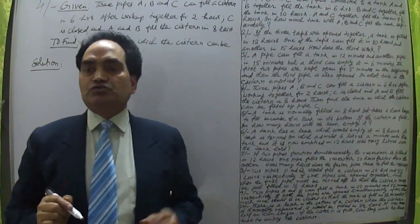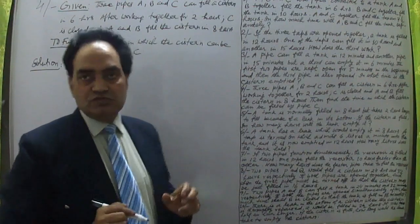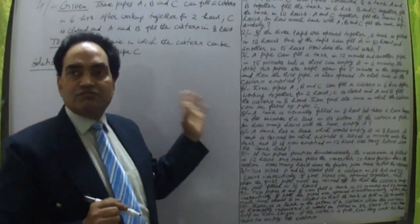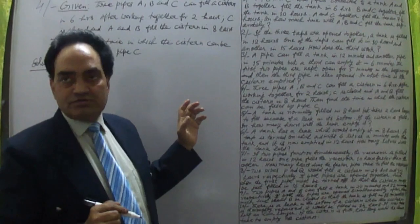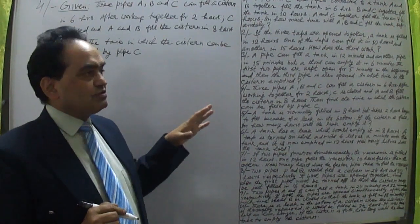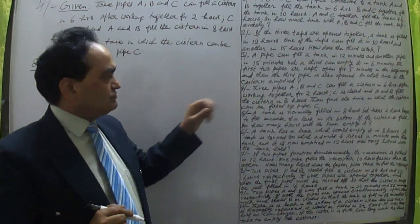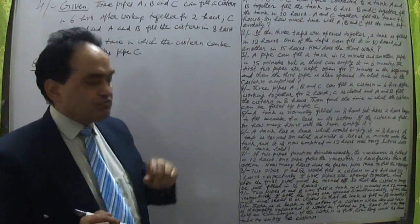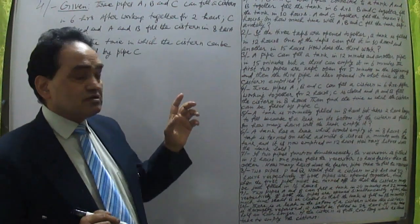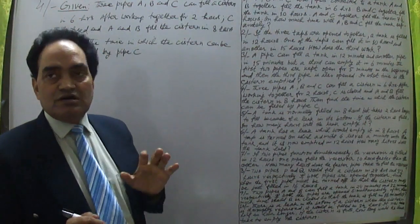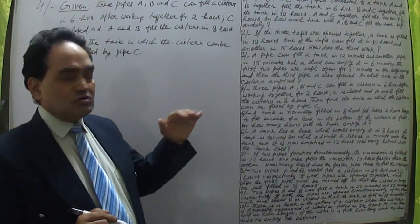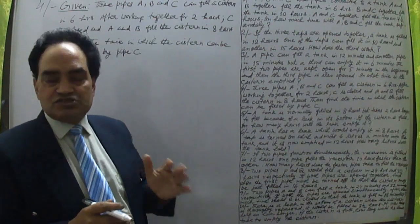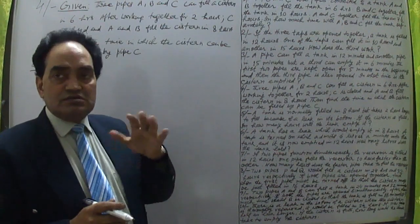Yes friends, we are continuing with question number four. Let me read the question first and then solve it. Question four says that three pipes A, B and C can fill a system in six hours completely — all three working together.